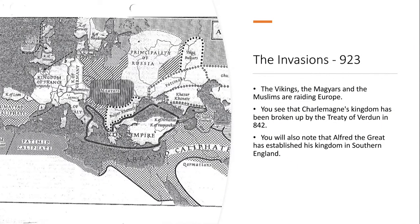Now we see the invasions period around 923. The Vikings are pouring into northern France. Alfred the Great has established control of southern England, though the Vikings still hold a small part called the Danelaw. The empire has broken apart via the Treaty of Verdun into Germany, France, and a middle territory. The Byzantine Empire is shrinking further. Muslim invasions hit northern Italy and southern France, Magyars struck Germany and France, and Vikings struck northern France.